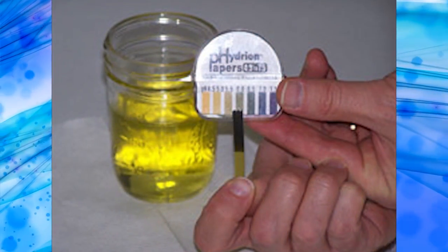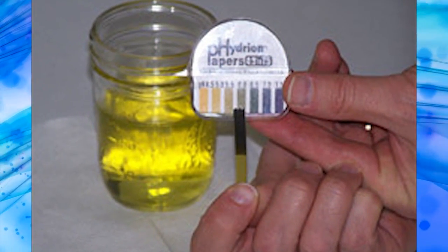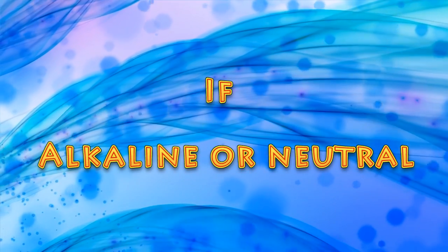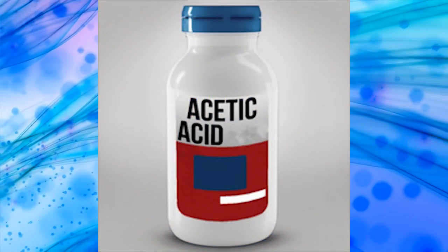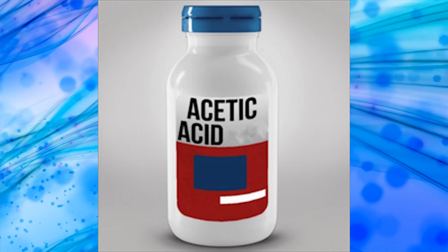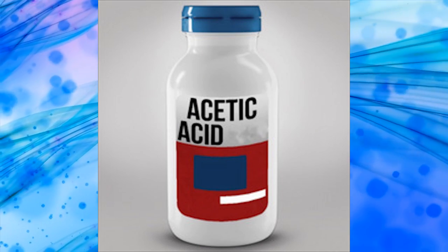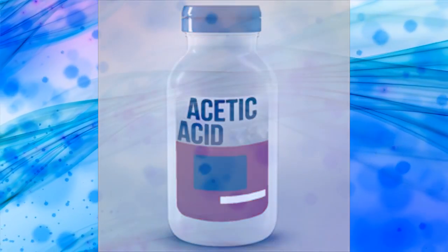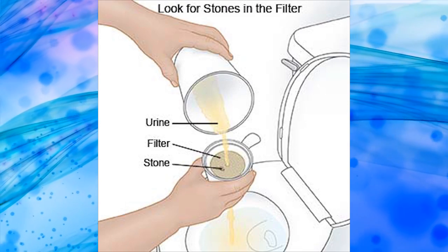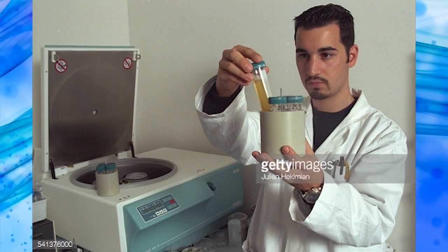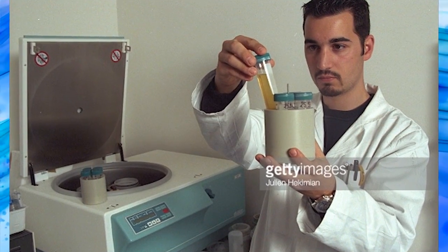Procedure: first of all, check the pH of the urine. If it is alkaline or neutral, add 10% acetic acid solution drop by drop until it is just acidic. Then, filter or centrifuge the urine.